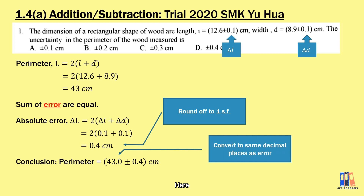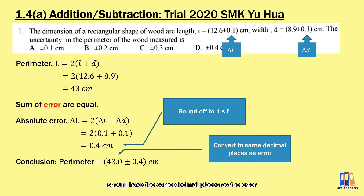You also need to make sure that the value of the perimeter has the same number of decimal places as the error.